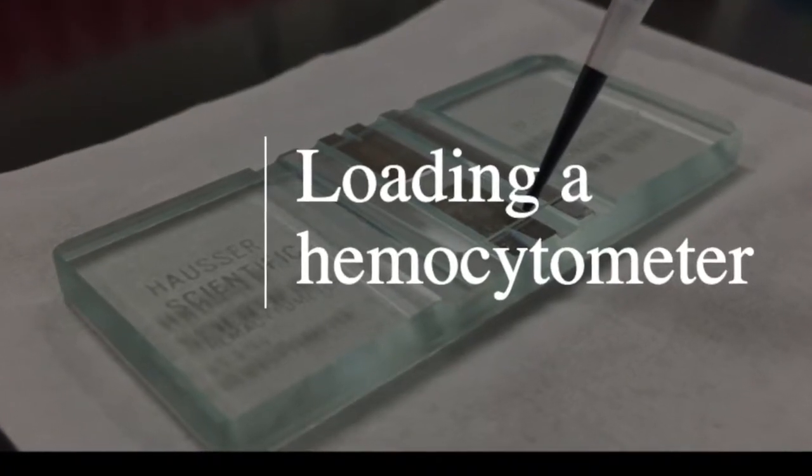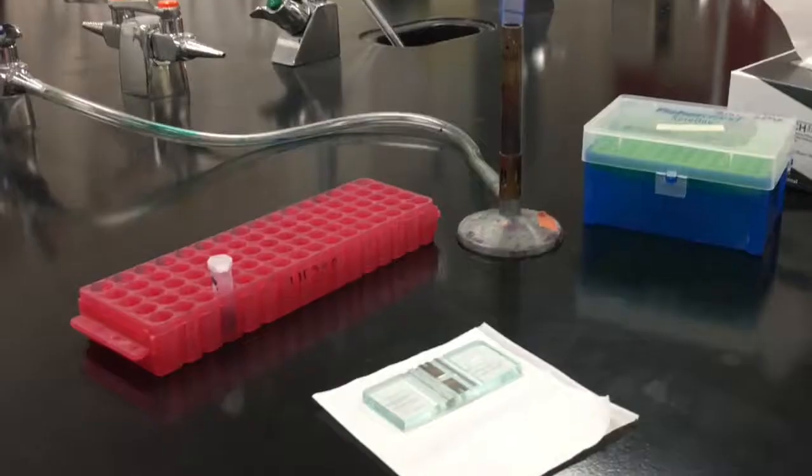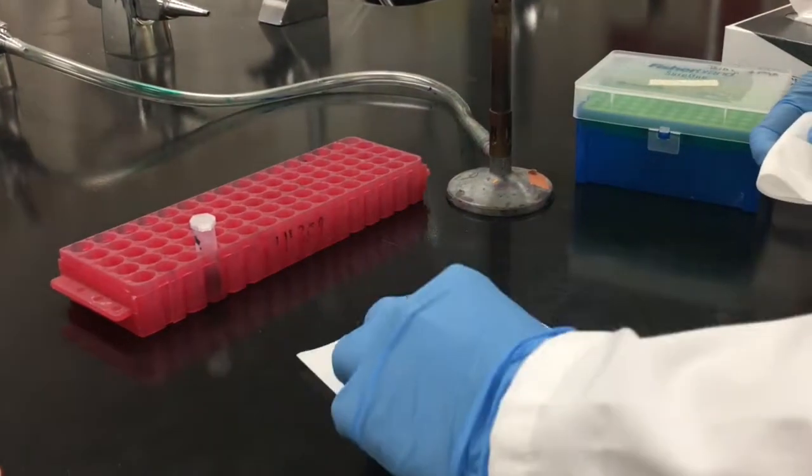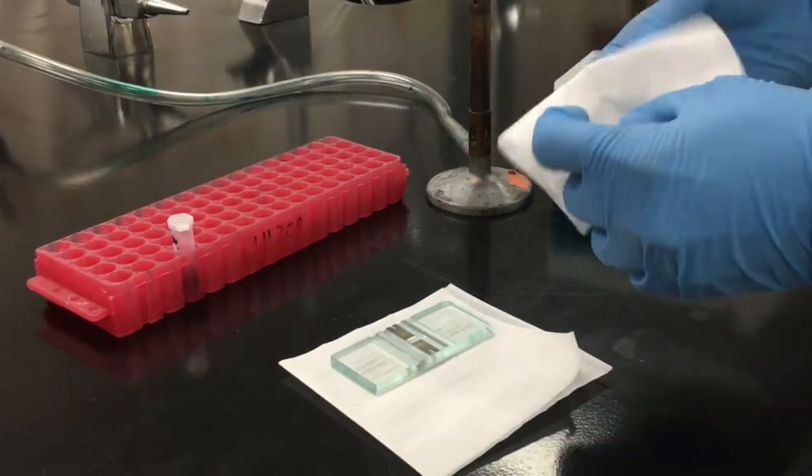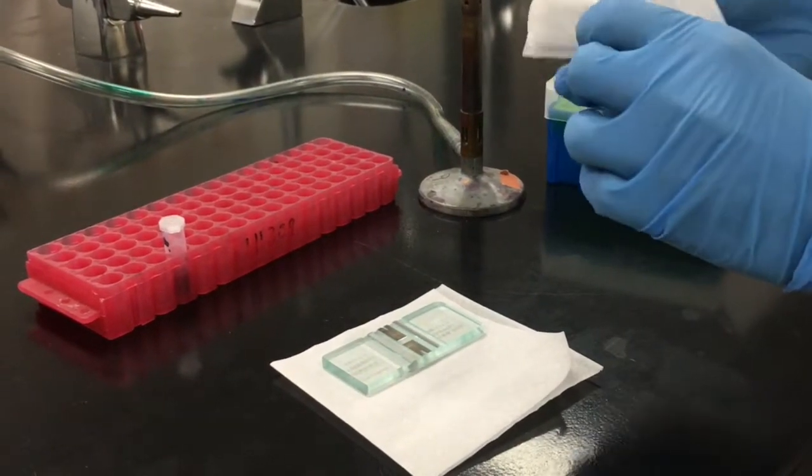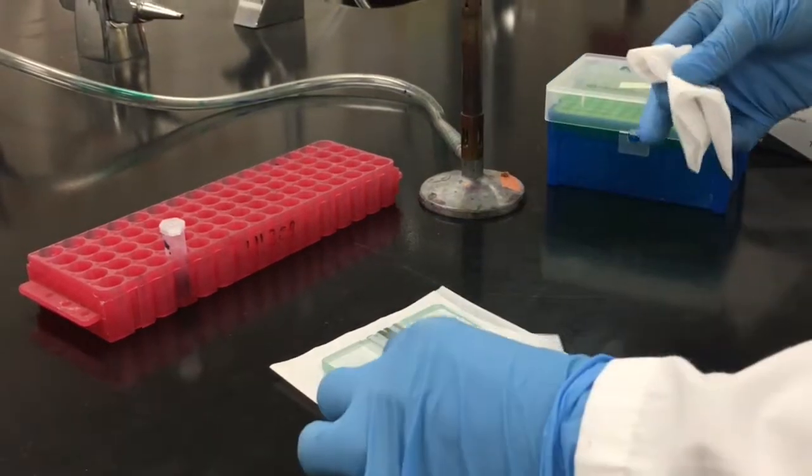This video will show you how to load your hemocytometer. To begin, start by cleaning the counting chamber and the cover slip with 70% ethanol. Be sure you're using lens paper or a kimwipe to avoid scratching the surface of the counting chamber or the cover slip.